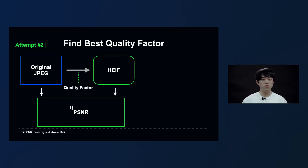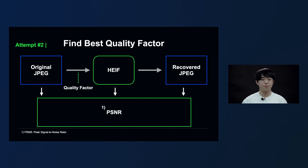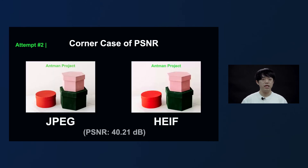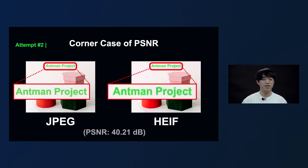For our second attempt, we tried to find the best quality factor by checking the noise in the image using PSNR. Because we also have the function to restore a HEIF file back to JPEG for devices that do not support HEIF, we calculated the PSNR of a total of three images. PSNR is used to determine the level of similarity between two images and yields a higher number when the two images are more similar. When we used the PSNR method, we were able to find the appropriate quality factor for most images. But the PSNR was not able to detect noise occurring in the details, because it calculates the average value for the overall image and could not easily detect noise in small areas.